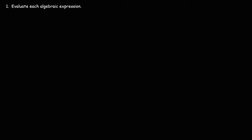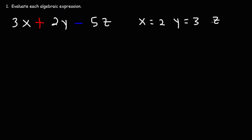In this video we're going to talk about how to evaluate algebraic expressions. Let's start with this example: consider the algebraic expression 3x plus 2y minus 5z. We're given that x is 2, y is 3, and z is negative 5.